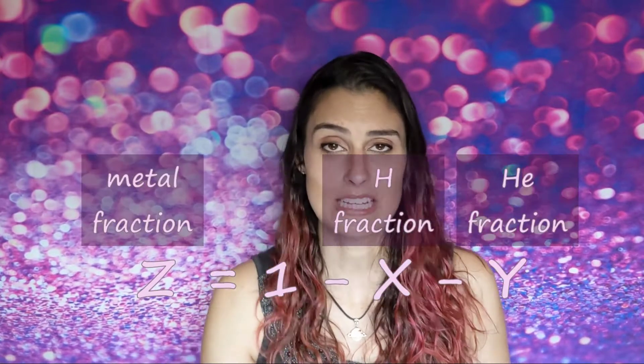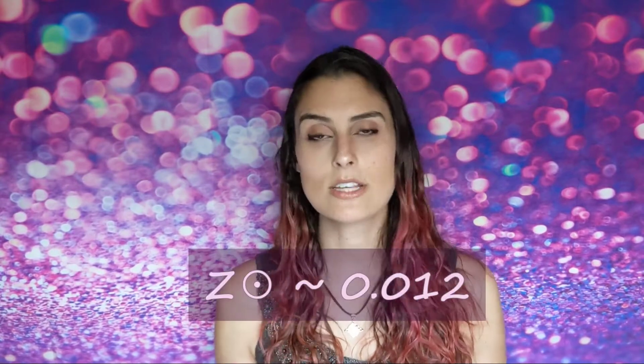And so it kind of made sense to expand that term once they realized there were other elements as well. I think this is probably the origin of why we use the term metals to refer to all of the non-hydrogen and helium elements. So, back to metallicity — metallicity is a measure of the fraction of metals, i.e. non-hydrogen and helium, usually represented by the capital letter Z, and it's usually measured by one minus the amount of hydrogen minus the amount of helium. For the sun, Z is about 0.012.